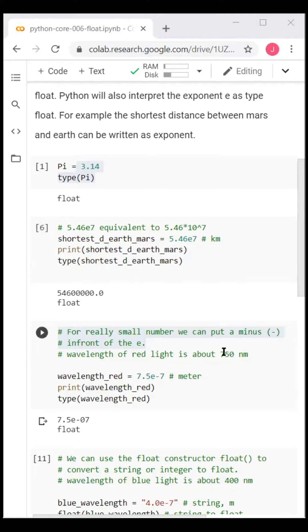For small numbers, we can put a minus number behind the exponent. For example, the wavelength of red light is about 7.5 times 10 to the minus 7 meters.